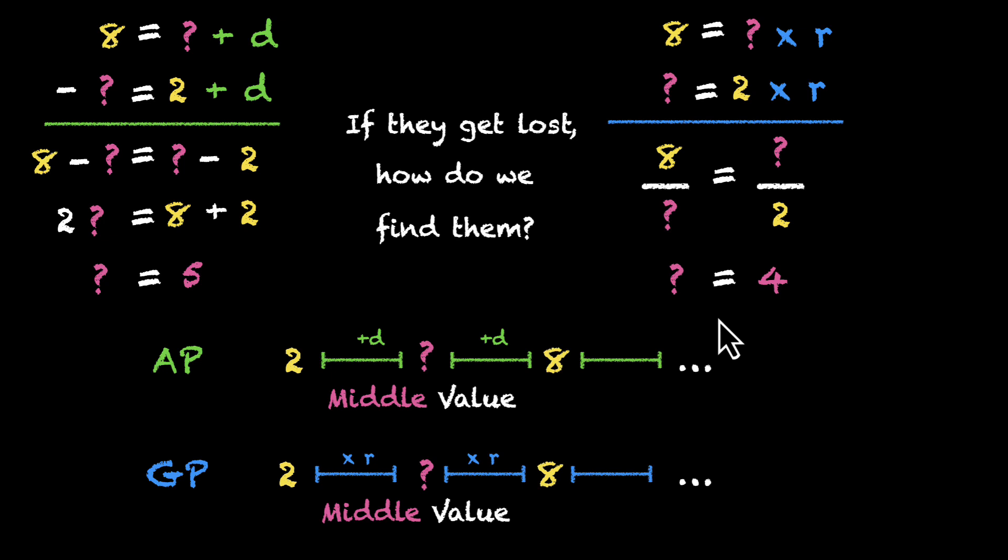Now you can also say that the middle value could be minus 4, but we're talking about positive numbers. And minus 4 does not sit in the middle of 2 and 8. So we'll take the positive one. The middle value is 4. And this is how we can figure out both AM and GM of 2 numbers, any 2 numbers.